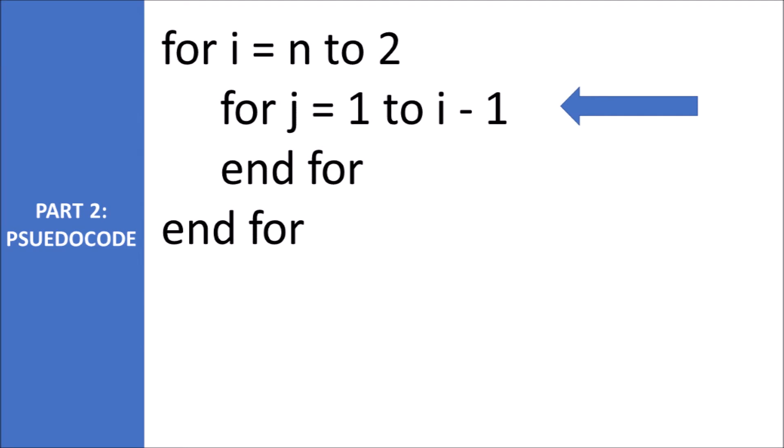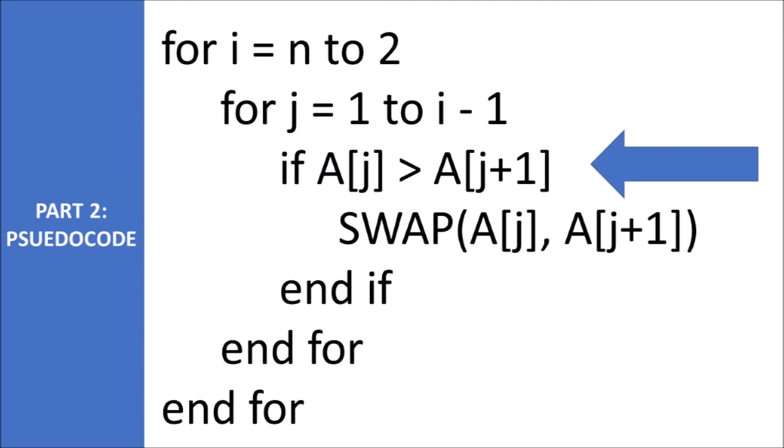Loop through all the indices before the bubble receiver. If the number after one of these values is bigger, swap the two.